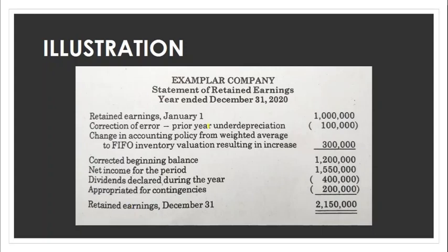Retained earnings may be appropriated for the following reasons: legal requirement, as in the case of treasury shares; contractual requirement, as in the case of bond redemptions; and entity policy, such as an appropriation for contingency — for example, when a company decides to accumulate an amount specifically for expansion or purchase of PPE in the next period. The example statement of retained earnings shows the beginning balance, prior period error correction, change in accounting policy, net income, dividends, and appropriation, arriving at the ending retained earnings balance.